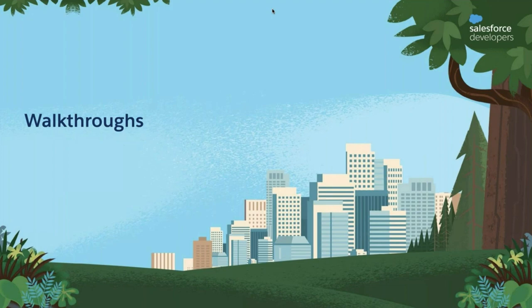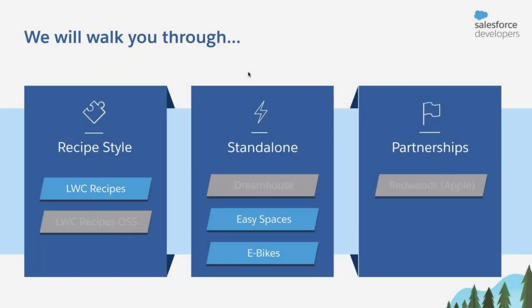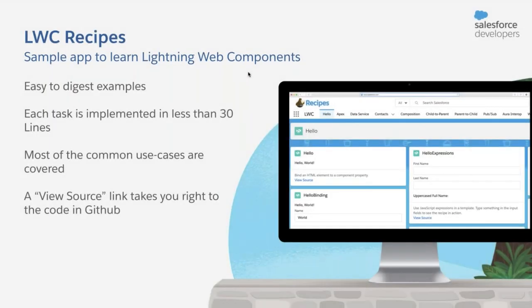Thanks Shashank. In the next few minutes I'm going to show you how to deploy and use the LWC Recipes app, after which we'll see the eBikes app. Easy Spaces will be covered by Aditya, and we'll also describe the other standalone and partnership apps like DreamHouse and Redwoods. LWC Recipes is a sample app that helps you learn Lightning Web Components — it has easy-to-digest examples for specific tasks, most written in 30 or fewer lines of code, with source code available for each example.